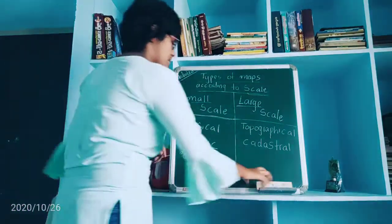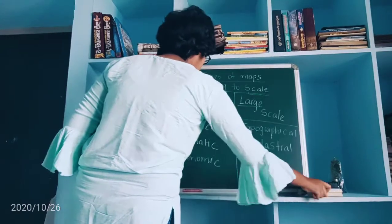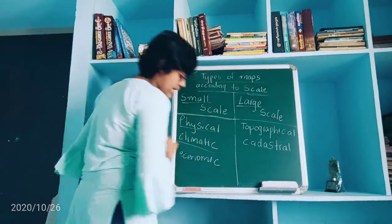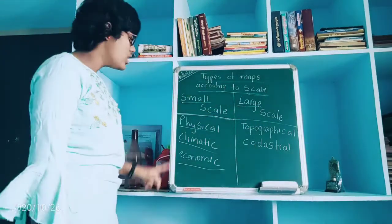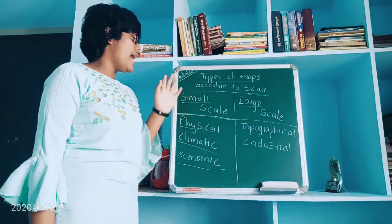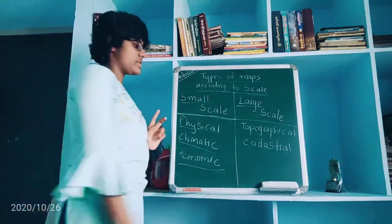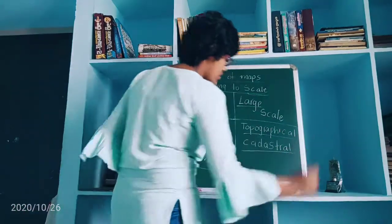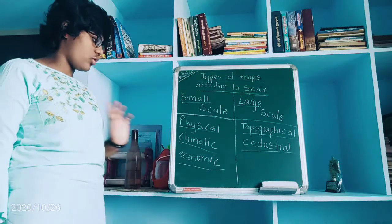On a small scale, we get three types of maps: one is physical, one is climatic, and the other one is economic. And in large scale maps, we get two types: one is topographical and the other one is cadastral.